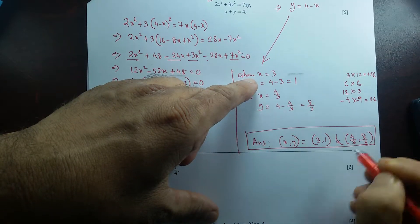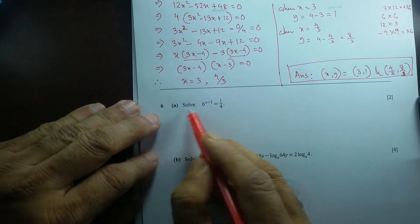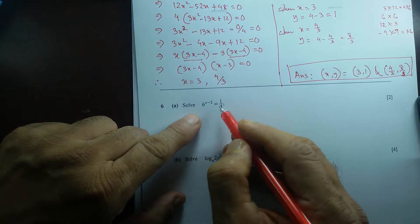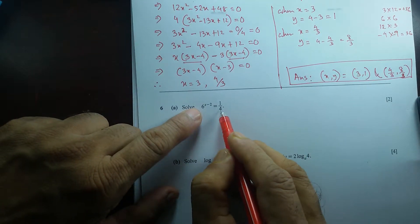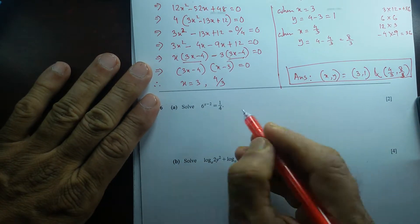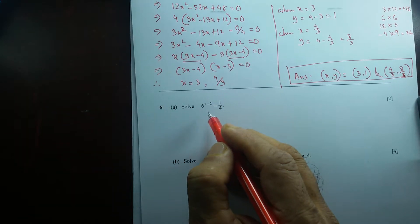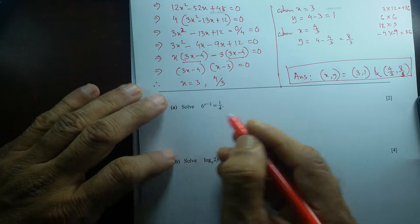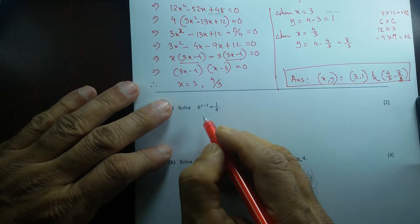That's our final answer for question 5. Next, question number 6: solve 6 to the power (x minus 2) equals 1/4. I cannot make 6 and 1/4 the same base, so I have to use logarithm. If I had e I would take the natural logarithm on both sides, but since I don't, I'll take common logarithm, base 10.